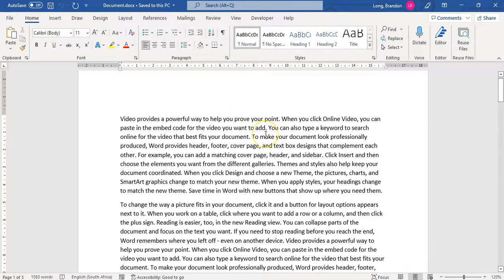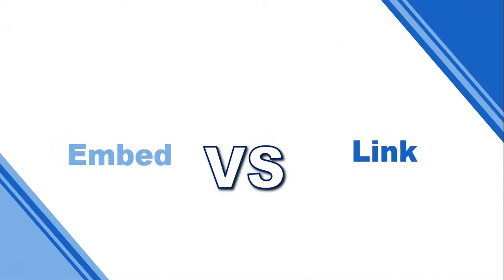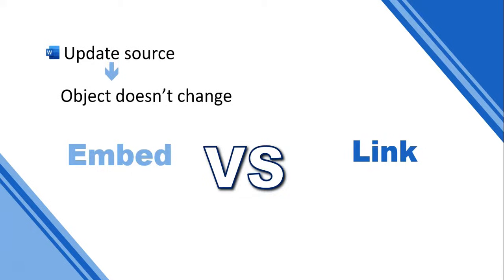So those are examples of exporting. Now let's talk about importing a file or data. Before we talk about importing, we need to understand the difference between embedding and linking. Embedding means when you update the source, the object doesn't change — it actually puts a copy of it into the document. If you change the original, it won't change your Word document. It makes the file larger, but if you move that file around it doesn't have to worry about always being attached to a link.